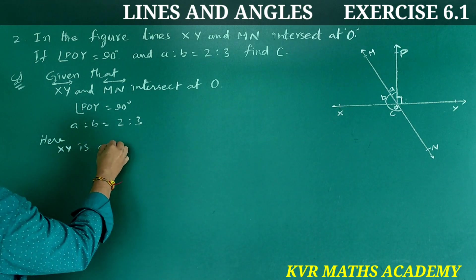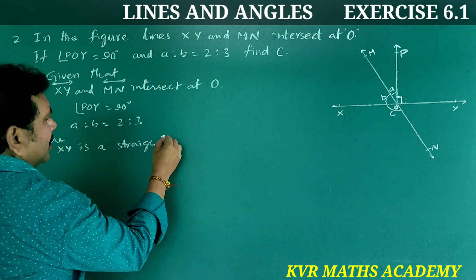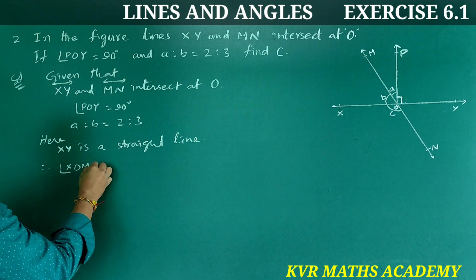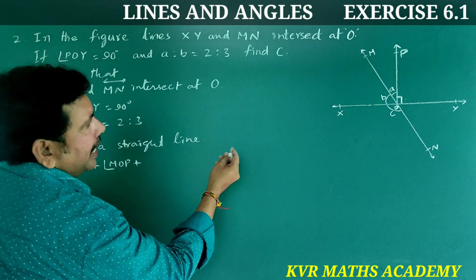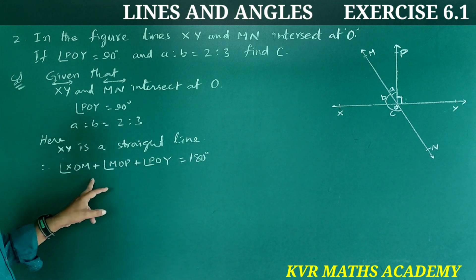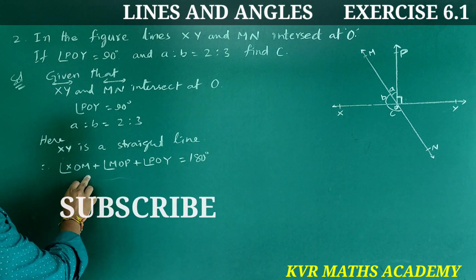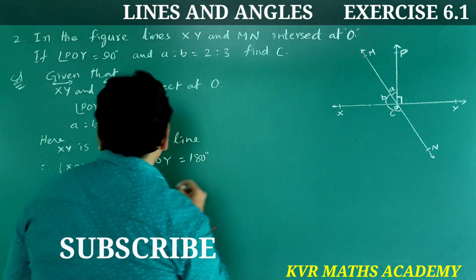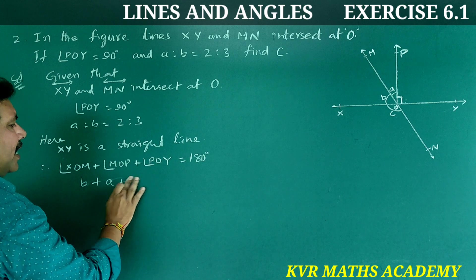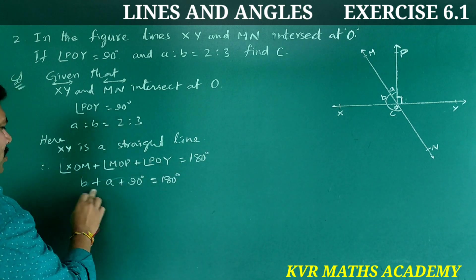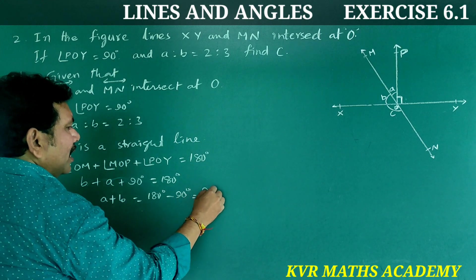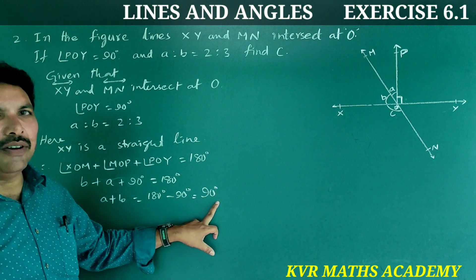XY is a straight line, so angle XOM plus angle MOP plus angle POY equals 180 degrees. Angle XOM is B, angle MOP is A, and angle POY is 90 degrees. So B plus A plus 90 equals 180 degrees, which gives A plus B equals 90 degrees.